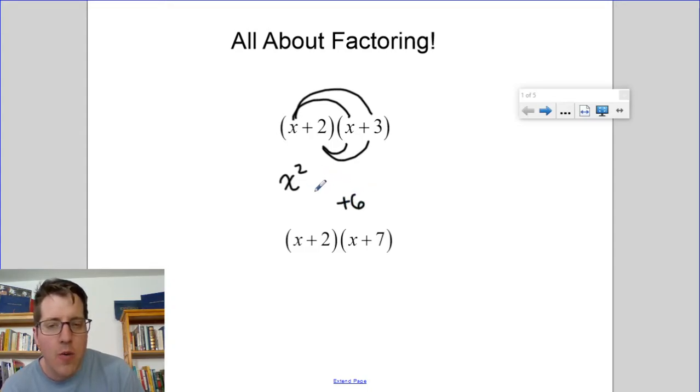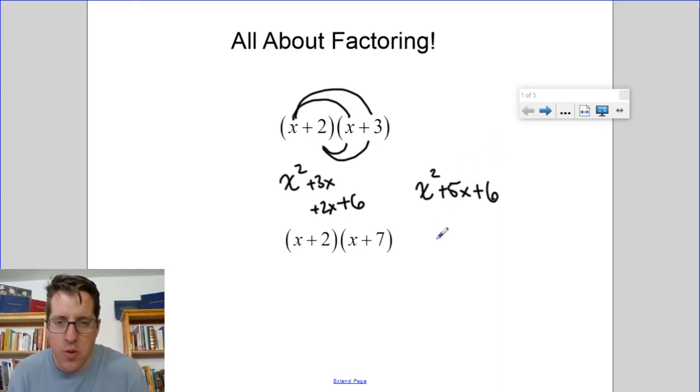The outers and the inners do something a little bit different. They stack. So the outers are plus 3x and the inners are plus 2x. My final answer for this multiplication problem would be x squared plus 5x plus 6 and those numbers totally matter and they totally mean something.